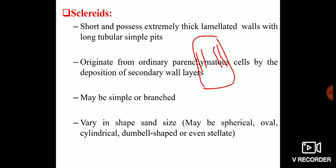And these cells originate from ordinary parenchymatous cells by the deposition of secondary wall layers. Unlike fibers which originate from the vascular cambium that we have discussed in the previous part, these cells originate from ordinary parenchymatous cells by extra deposition of secondary wall layers.